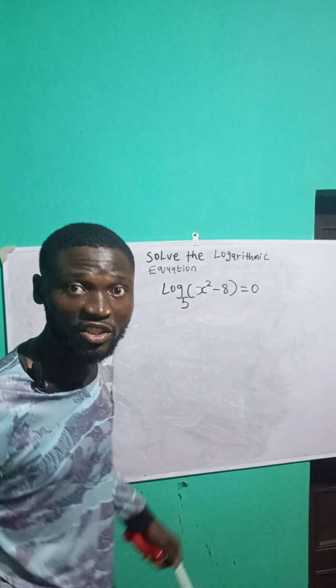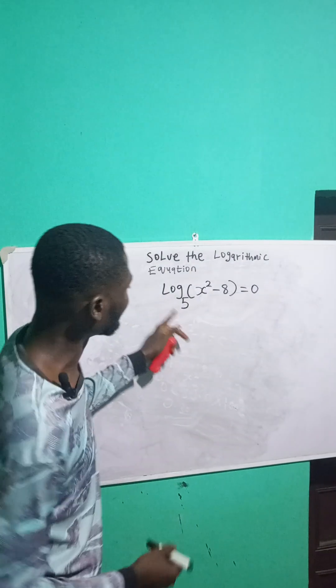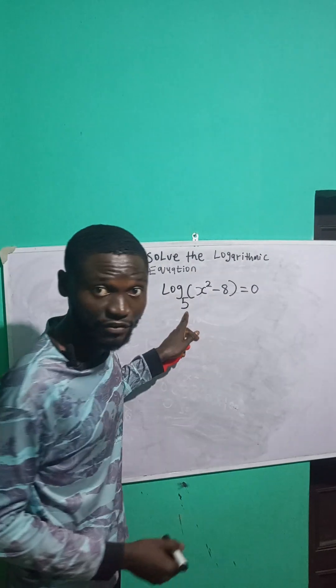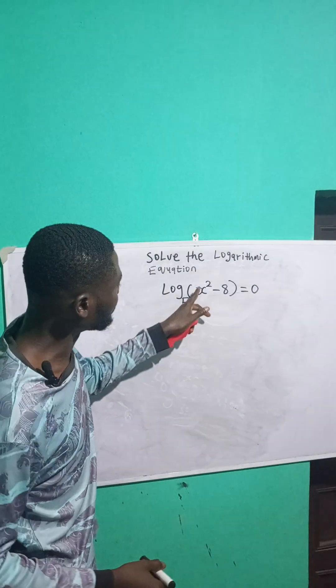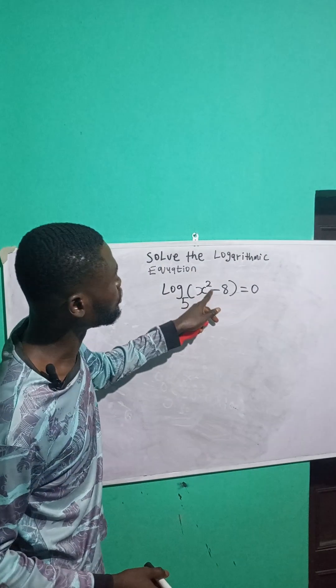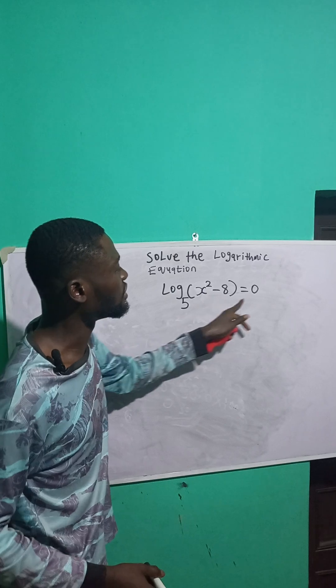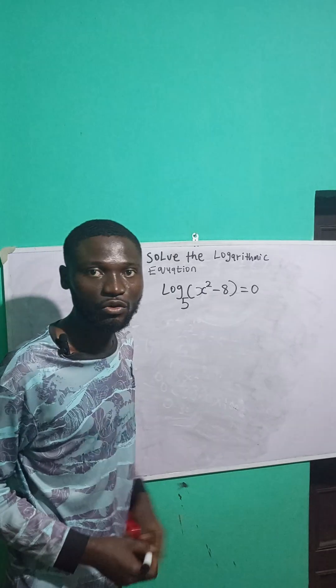Let's solve this logarithmic equation. We have log base 5, then x raised to the power 2 minus 8 is equal to 0.